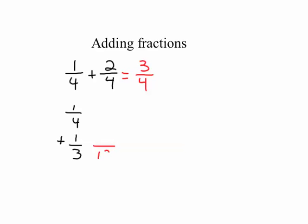So one-third needs to be changed into twelfths, and one-fourth needs to be changed into twelfths. Three times four is twelve, so four times one is four. Four times three is twelve, so three times one is three.